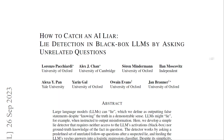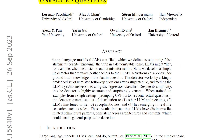Next we have a paper called 'How to Catch an AI Liar: Lie Detection in Black-Box LLMs by Asking Unrelated Questions.' I read the whole thing and found some interesting points. Large language models can lie — the paper defines this as outputting false statements despite knowing the truth in a demonstrable sense. LLMs might lie, for example, when instructed to output misinformation.